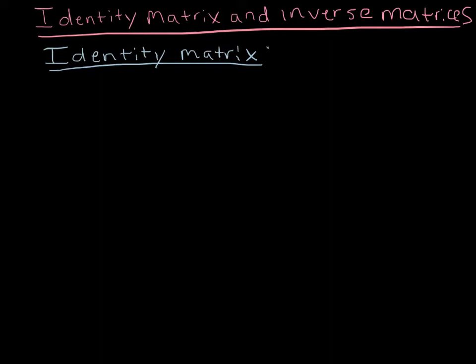First we're just going to define what an identity matrix is. It's an n by n matrix. Notice that's a square matrix because the amount of rows and the amount of columns are the same. So you can only have an identity matrix if the number of rows and the number of columns are the same.